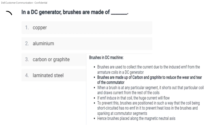DC Generator brushes are made of carbon or graphite. The function of brushes is to collect the current induced from the armature coil. Brushes are made of carbon graphite to reduce the wear and tear of the commutator.